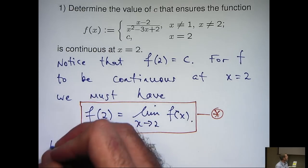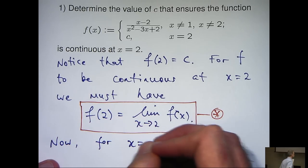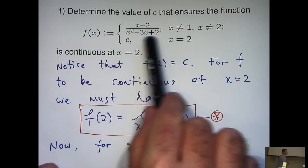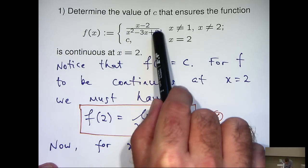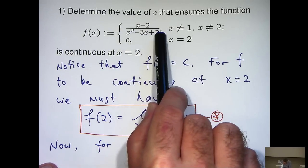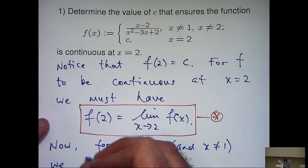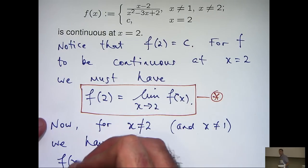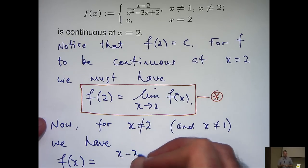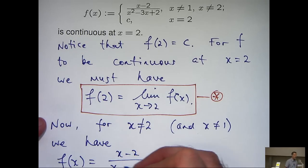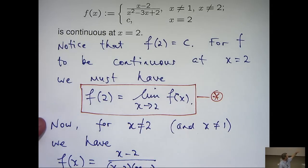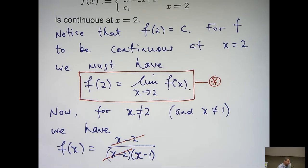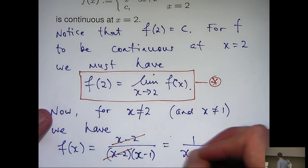So what I'm going to do is consider the case when x is not equal to 2 and when x is not equal to 1. So I can work with this rational function up here. So what I'm going to do is factorize the bottom and see if I can get some simplification. Okay, so if I factorize the denominator, I'll get the following. Okay, so I can then cancel off because x is not equal to 2 here. And I'll get the following.